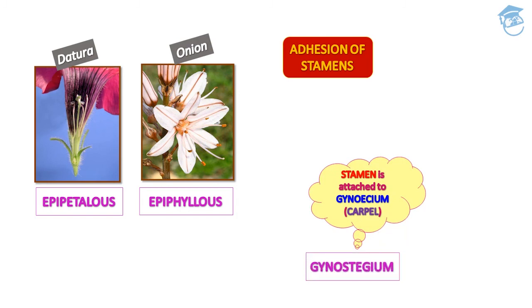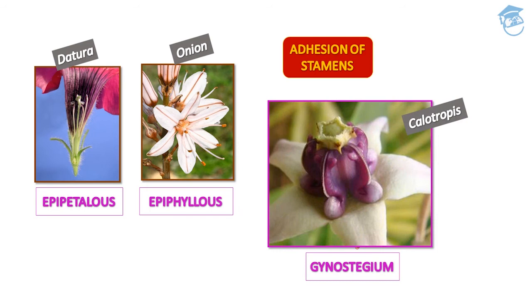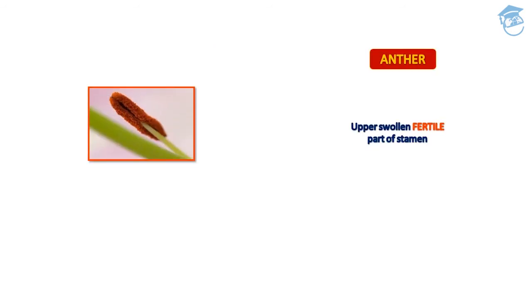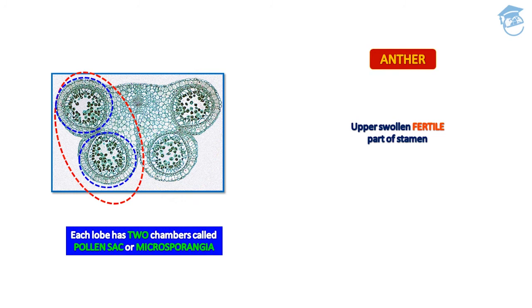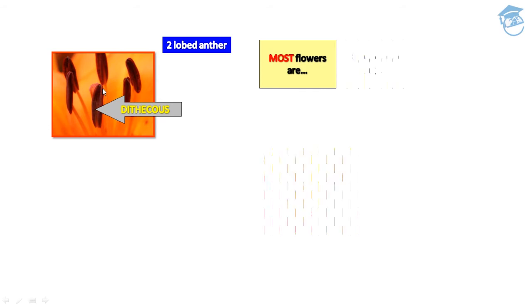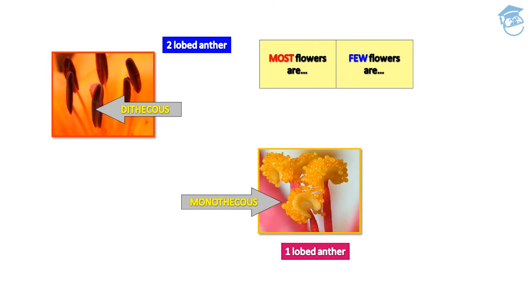The anther is the upper swollen fertile part of the stamen. It usually has two lobes, each with two chambers called pollen sacs, also known as microsporangia. Pollen grains are called microspores. Most flowers are dithecous — having a two-lobed anther. A few flowers are monothecous — having only one lobe. The small dots visible represent pollen grains.